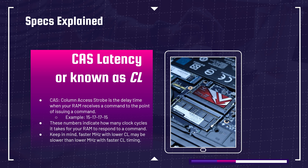Now let's go on to latency, or CAS latency, also known as CL when you're looking for it on the RAM module. CAS — column access strobe — is the delay time when your RAM receives a command to the point of issuing a command. For instance, you open Google Chrome, it receives and then sends the command — that's the amount of latency, the delay in that cycle. An example of how this might look is 15-17-17-15. These numbers indicate how many clock cycles it takes for your RAM to respond to a command.